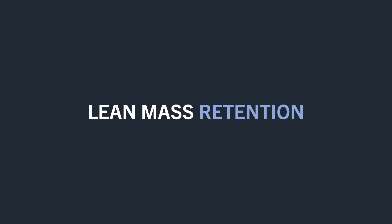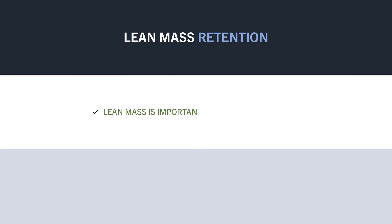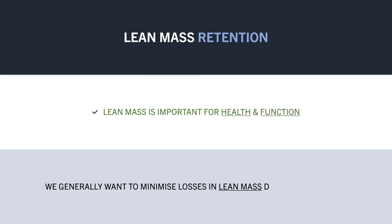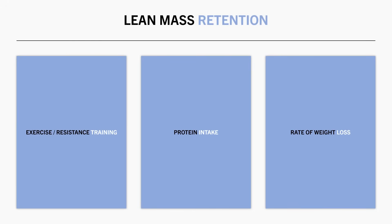Moving on to the second half of the fat loss equation, we have lean mass retention. Lean mass refers to basically everything that isn't fat — primarily muscle mass, but it also includes bone and organ mass. This is basically all the good stuff which is important for health and function. So in most cases we want to limit the amount of lean mass we lose during the weight loss process for aesthetic, health, and functional purposes. There are three primary strategies we can use to improve lean mass retention.